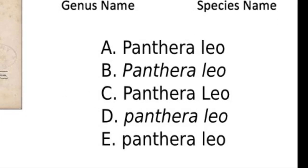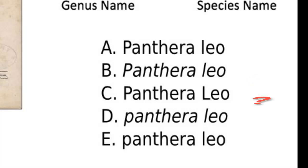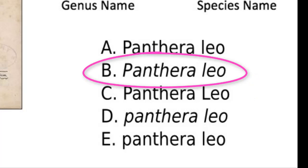Panthera leo is the scientific name for the African lion. Which version do you think is written correctly? If you picked B, you're correct.